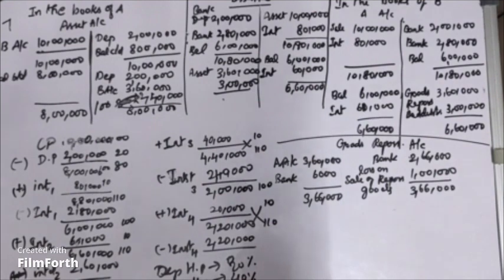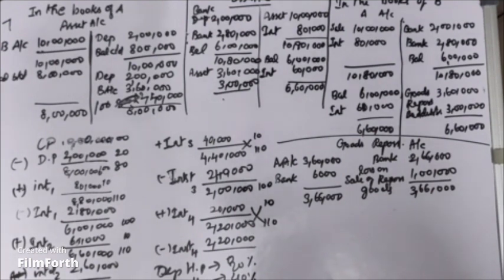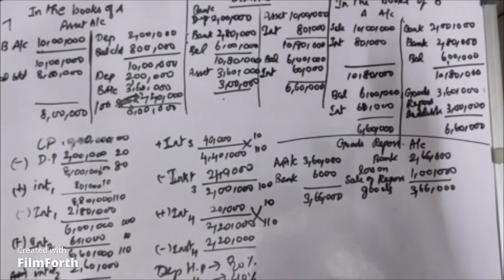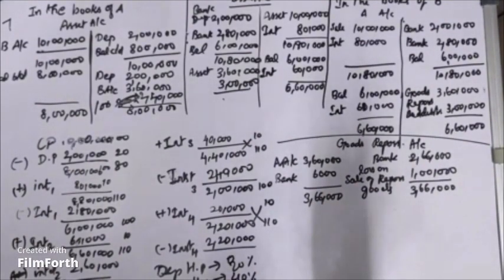Interest is 10% and depreciation is 20% SLM method. A is a failure to pay the 2nd installment, so after negotiation on 1st January 2013, they agreed to leave 2 machines with A, adjusting the value of the other 3 machines against the amount due. So partial repossession, this method.